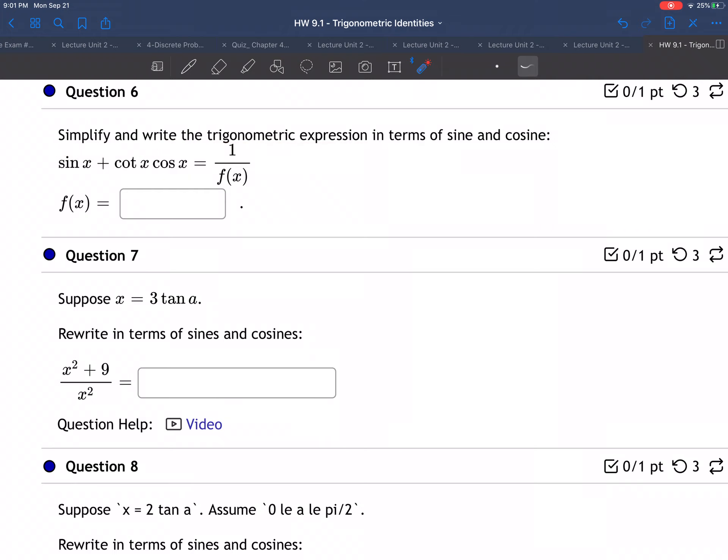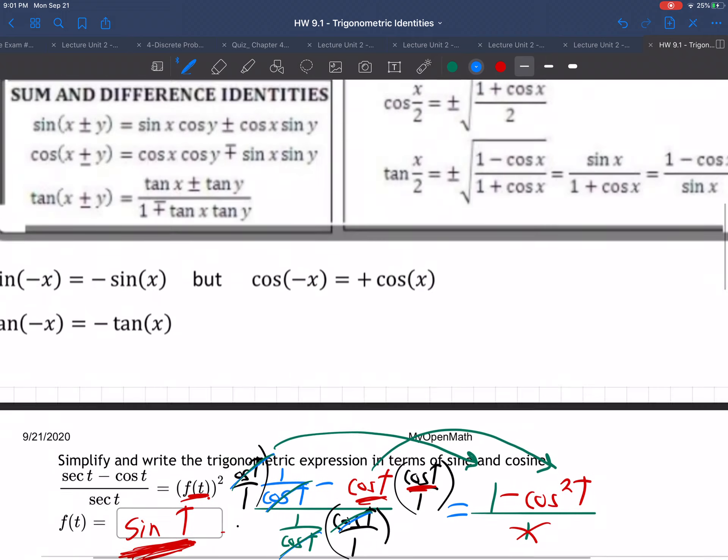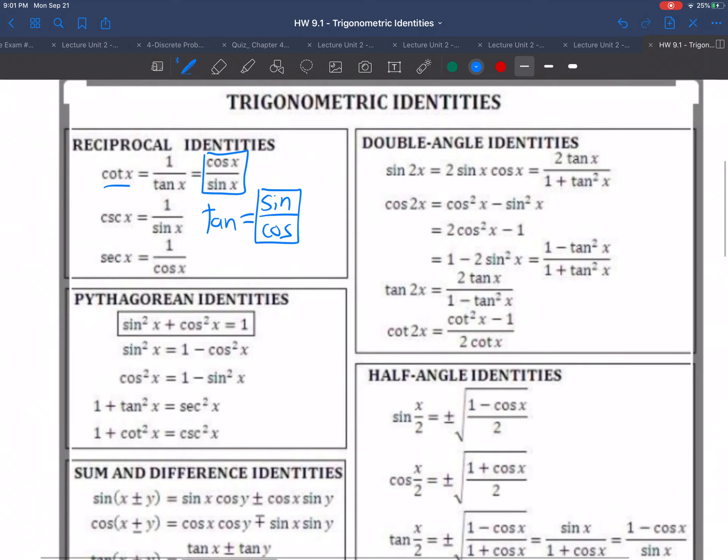So I'm going to write this in terms of sine and cosine. So how is this going to work? Well, let's begin. So right here we have sine of x plus, and then we have, notice what comes next, cotangent. Now, let's go look at our formula sheet. Cotangent up here, it's right there. Cotangent is cosine over sine.